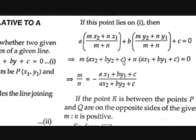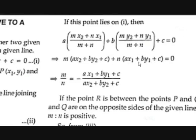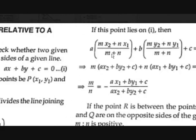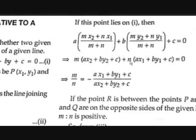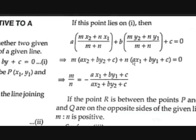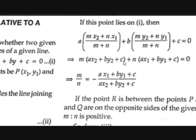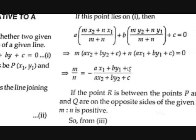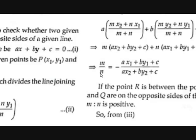Simplifying gives: M(AX2 + BY2 + C) + N(AX1 + BY1 + C) = 0. Sending the second term to the other side: M(AX2 + BY2 + C) = −N(AX1 + BY1 + C). Therefore M/N = −(AX1 + BY1 + C)/(AX2 + BY2 + C). This is our required ratio M:N.